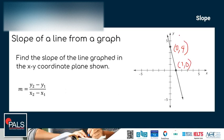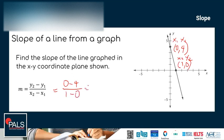Now we have two coordinate points — the x and y intercepts — and we can plug the values into the formula. We assign (0, 4) as x sub 1 and y sub 1, and (1, 0) as x sub 2 and y sub 2. Note: even if you interchange which is x sub 1 and x sub 2, as long as they go together, you will still arrive at the same slope. Plugging in: y sub 2 is 0 minus y sub 1 which is 4, over 1 minus 0. The answer is negative 4.